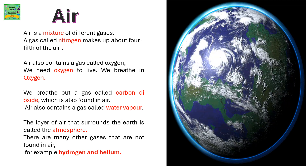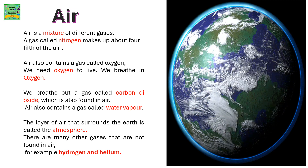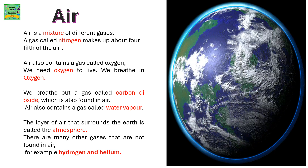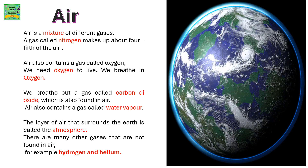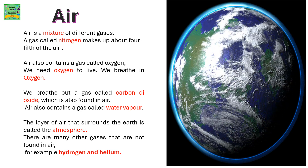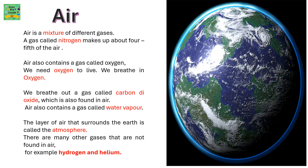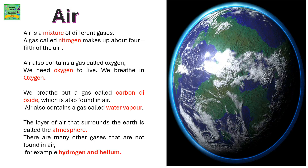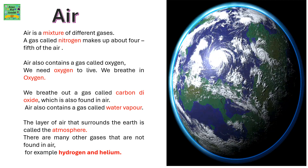Air is a mixture of different gases. A gas called nitrogen makes up about four-fifths of the air. Air also contains oxygen, which we need to survive — we breathe in oxygen. We breathe out carbon dioxide, which is also found in air. Air also contains water vapor. The layer of air surrounding the earth is called the atmosphere. Many gases are not found in air, for example hydrogen and helium.